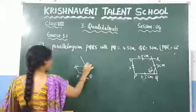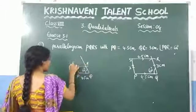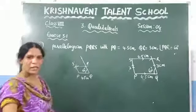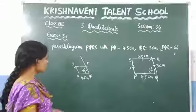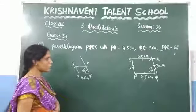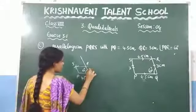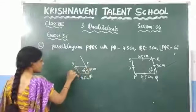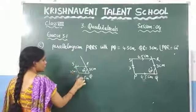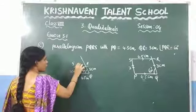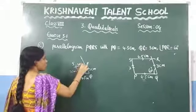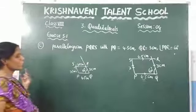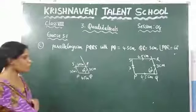So PQ, R, and S — we have drawn the parallelogram by the given measurements. Let us write the measurements: this is 3 centimeters, if this is 3 this must also equal 3, and if this is 4.5 this must also equal 4.5. By using these measurements, we have drawn the parallelogram PQRS.